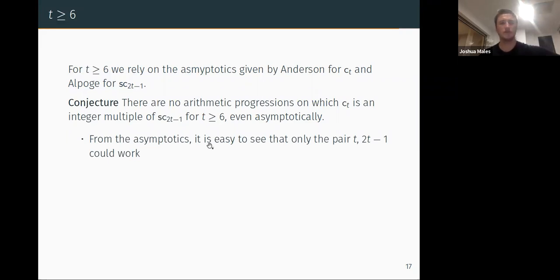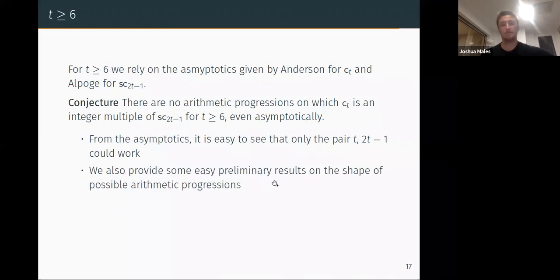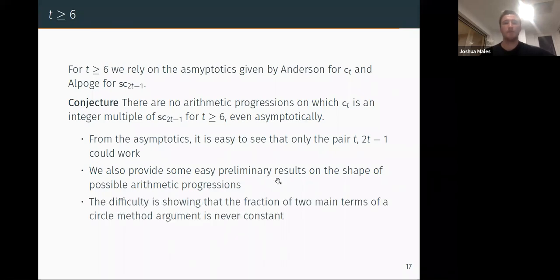So what are some easy results towards this? Well first of all, why 2t-1 and t? This is very clear if you just look at their asymptotics. We also provide some easy results on the kind of shapes of these arithmetic progressions that they could be. But the difficulty is that, like I said here, Anderson and Ahlgren use the circle method, and if anyone here is familiar with it, the main terms in the circle method are not so easy to control. We have to look at the fraction of two main terms of circle method arguments, and these things we're not sure if they settle down eventually asymptotically. So if anyone here has worked on circle method kind of things and fractions of main terms, I'll be very interested to hear how you would deal with this.